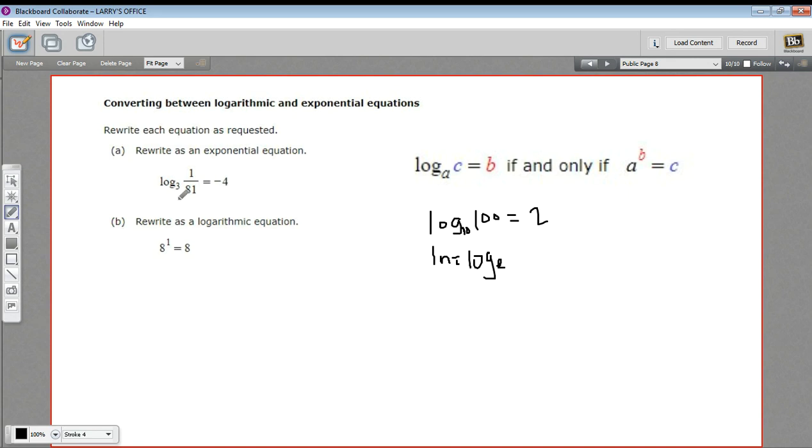So if you look at this first problem, it says log base 3 of 1 over 81. What that's asking is, what power do you raise 3 to to get 1 over 81? And in this case, take 3 to the negative 4 power. And so we've got the whole equation here.